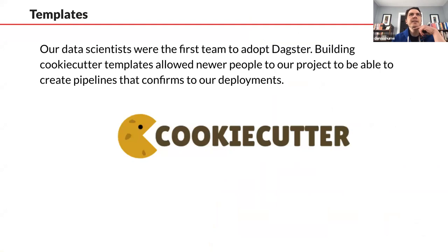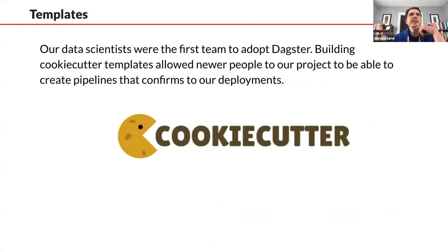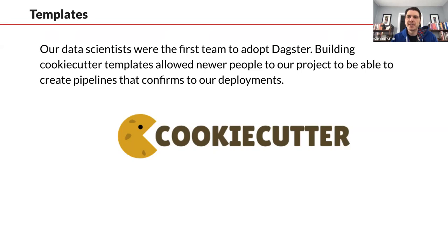One thing holding all of this together is that our data scientists have put together some very nice cookie cutter templates. This allows us to very easily spin up new pipelines that adhere to our deployment setup — making it easier for people to quickly get a pipeline off the ground without having to worry about all the infrastructure in the back, so you can just focus on the logic of your pipeline.